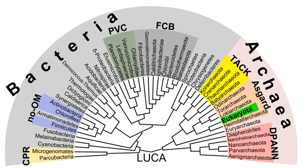Prokaryotic cells have various shapes. The four basic shapes of bacteria are cocci (spherical), bacilli (rod-shaped), spirochetes (spiral-shaped), and vibrio (comma-shaped). The archaeon Haloquadratum has flat square-shaped cells.